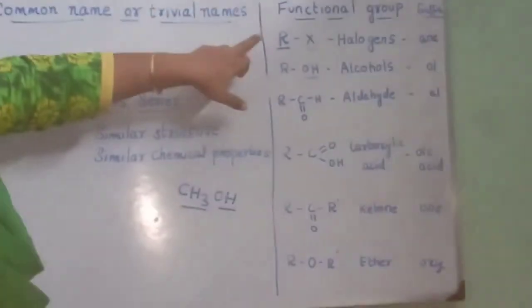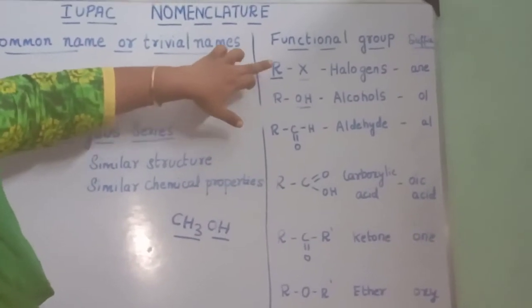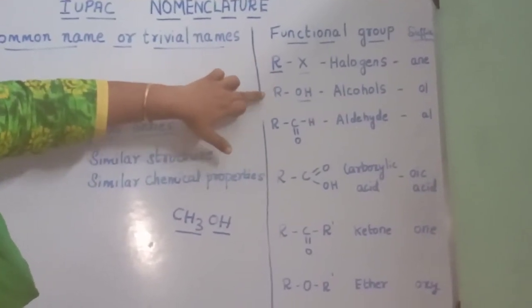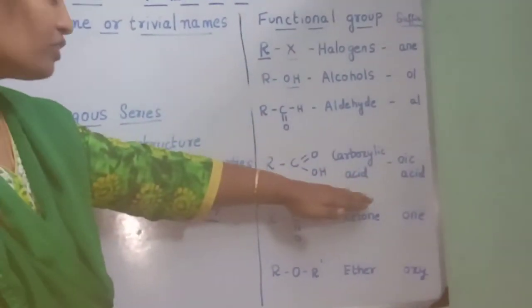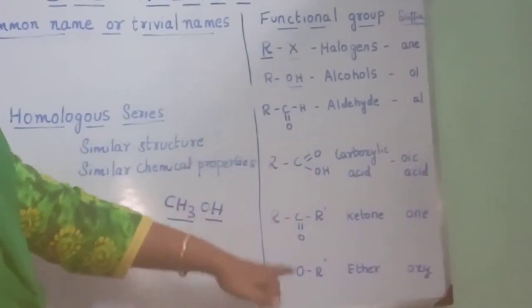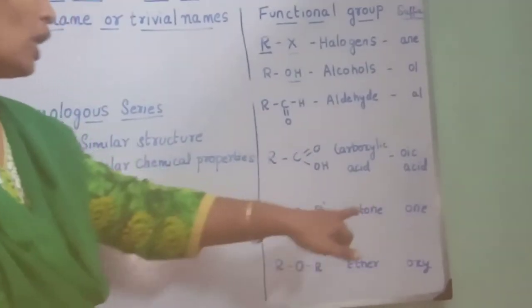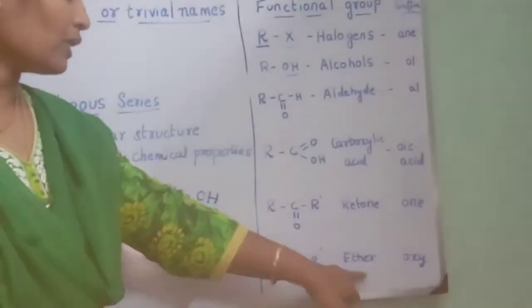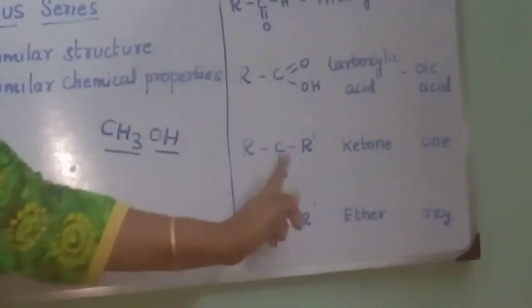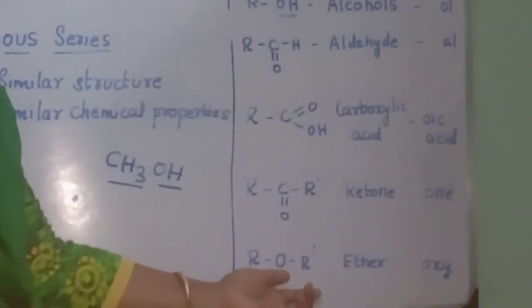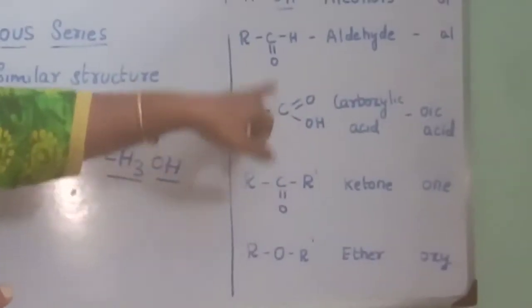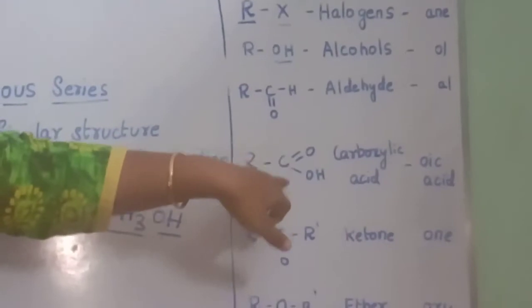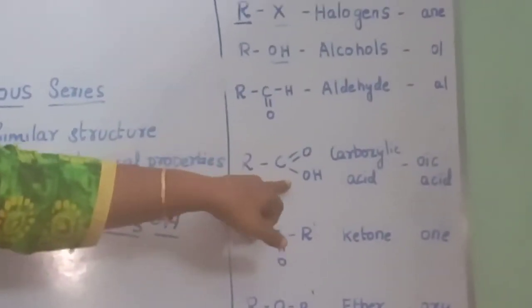One specific thing to note about functional groups: for halogens, alcohols, aldehydes, and carboxylic acids, the functional group is attached at the end of the carbon chain — at the terminal positions. Whereas for ketones (C=O) and ethers (O), the functional group is attached in between the hydrocarbon chains and will not appear at the terminal positions.